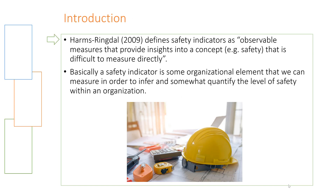A safety indicator can be defined as an observable measure that provides insight into a concept — in this case, safety. It provides insight into a concept that is difficult to measure directly. In research, we have things called latent variables; latent means hidden. These variables are very difficult to identify directly.